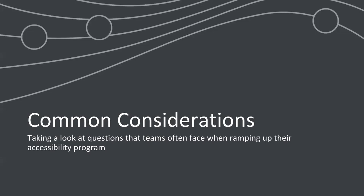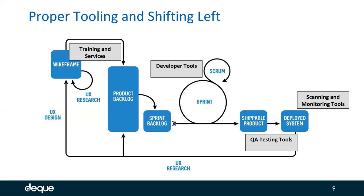There are a number of different solutions at various stages — tools for developers, tools for QA, and scanning/monitoring tools — and it's important to consider which solution is best fit for your specific organization. We have tools for developers, tools for QA, and tools for scanning and monitoring, and we want to think about the considerations for each at their various stages to get maximum value with the lowest disruption to existing processes.